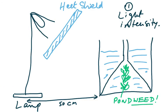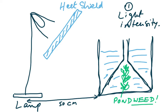The apparatus I have drawn is very simple. We have a beaker with an inverted funnel, and inside the inverted funnel we place the pond weed. We place a lamp at a fixed distance, and we put a heat shield in front of it. The heat shield is made of glass filled with water so that only light can pass through.